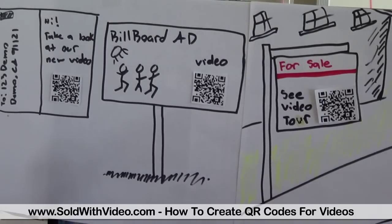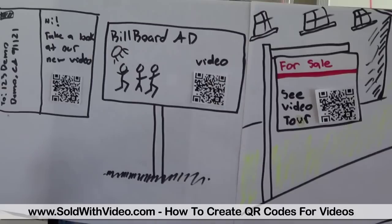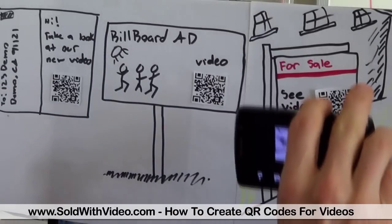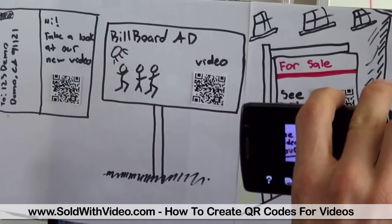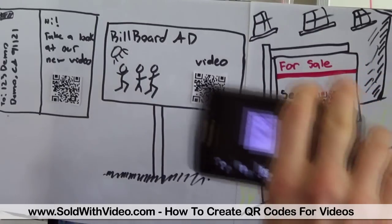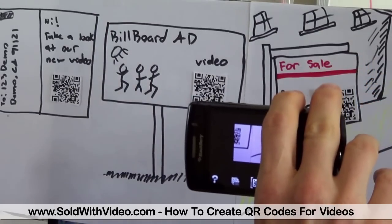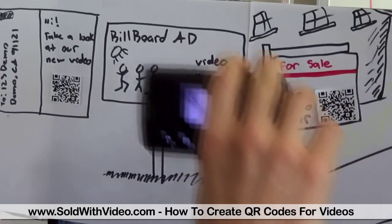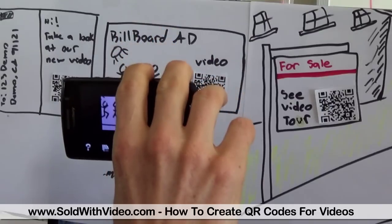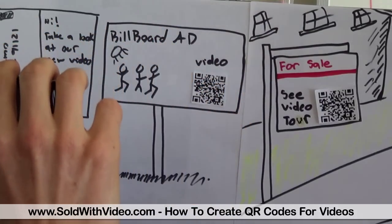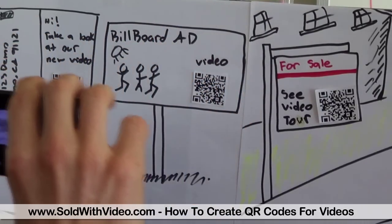My drawings are not that great, so just bear with me — these are just examples. So let's just pretend someone's walking down the street. They can take their phone, scan the QR code off the for sale sign, and the video will play right there on their phone. Same with the billboard and same with the postcard.